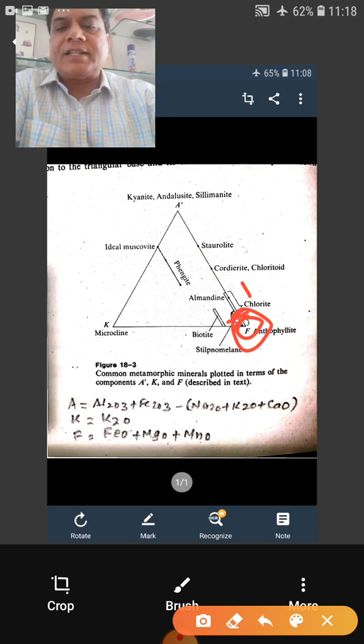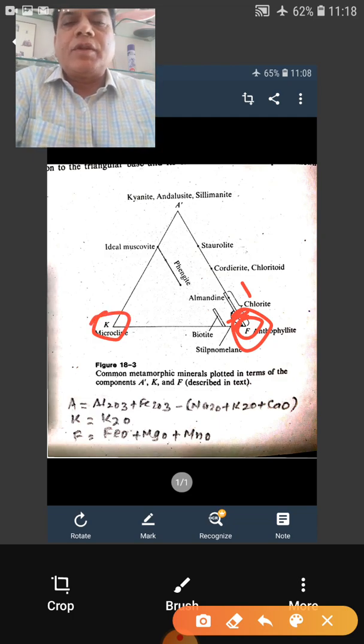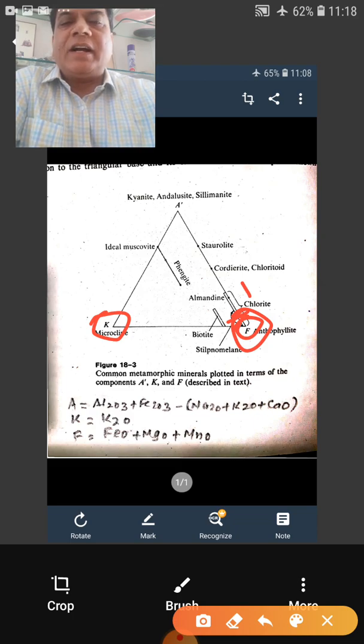Particularly on the left hand side, this is K instead of your Ca. And the procedure is same for calculating out AKF values that which was there for the ACF values.